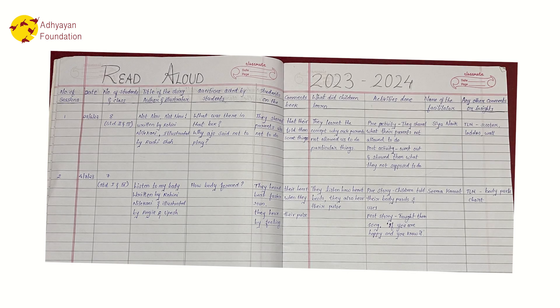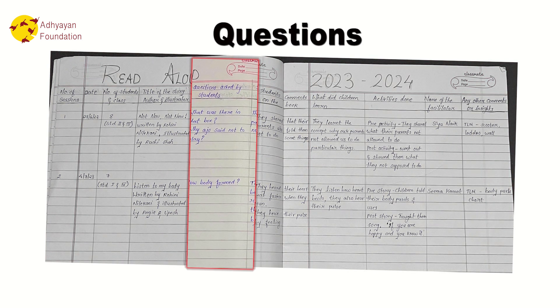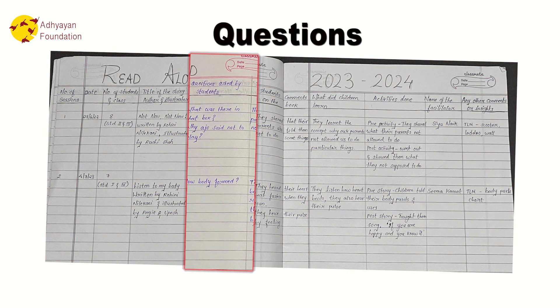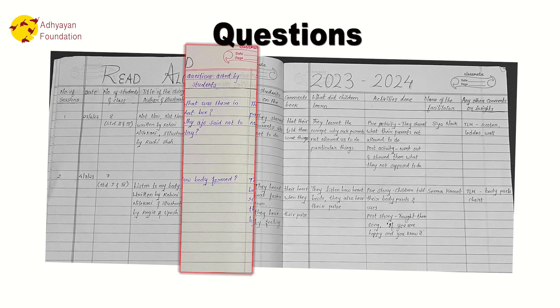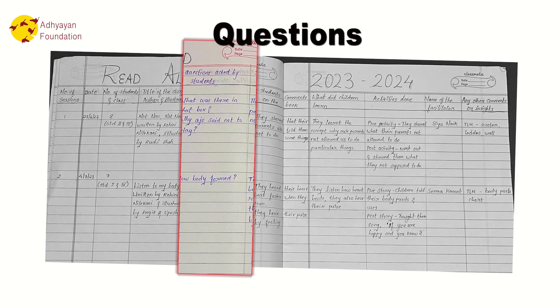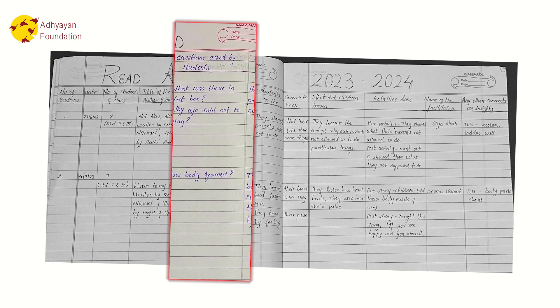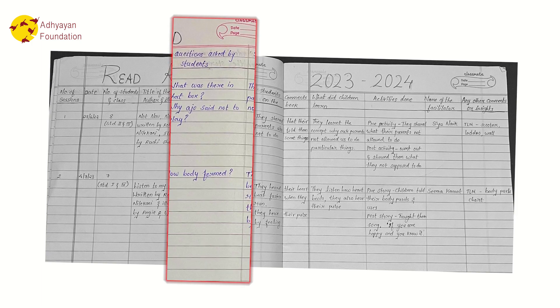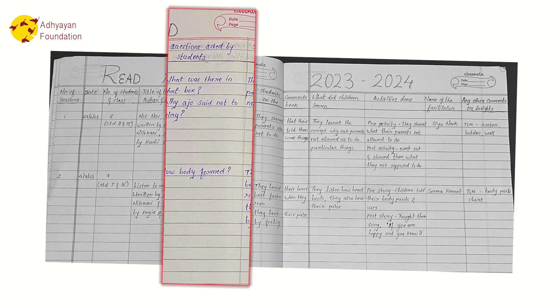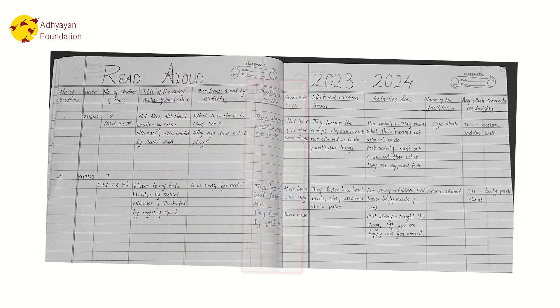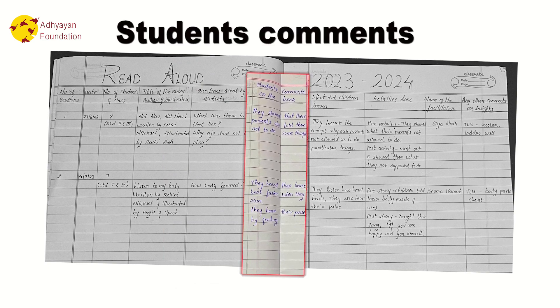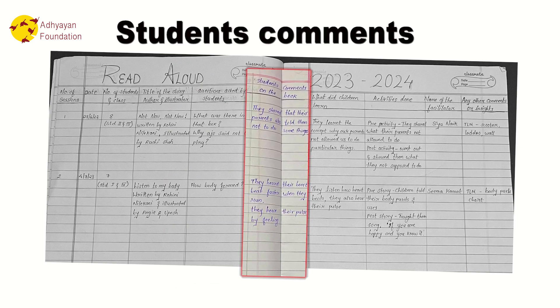Next is the questions asked by the children. This is very important — when you are telling the story or during the read aloud session, students ask questions, maybe related to the characters or the colors.